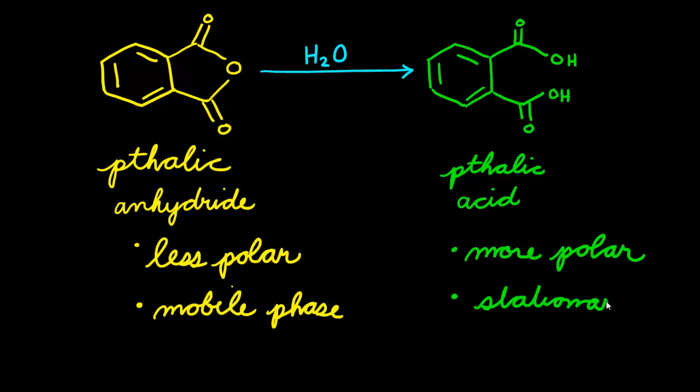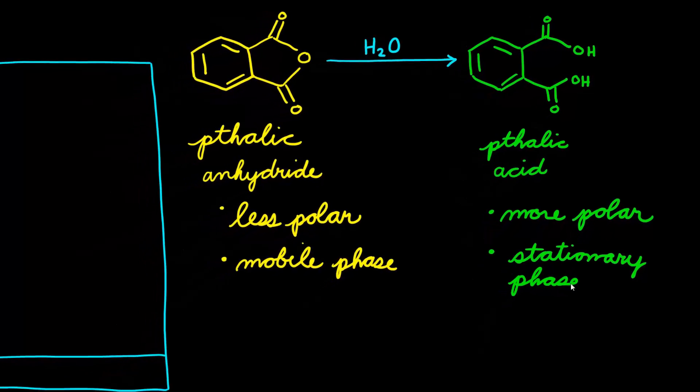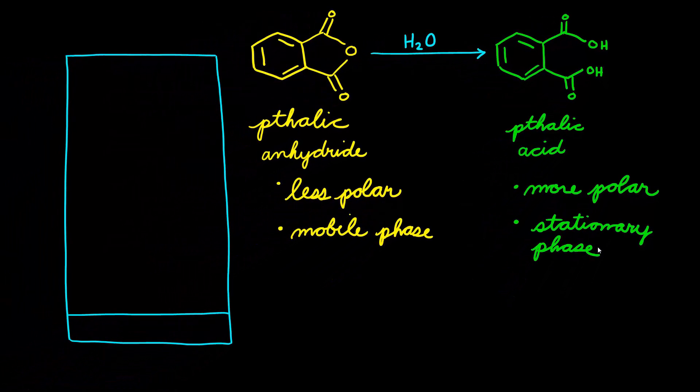And if we wanted to predict where these would show up on our TLC, we would think if something is more attracted to the mobile phase, that means it travels further. So let's put our yellow spot somewhere around here. And let's say that our solvent had gone up to about here. And compared to that, the green dot, or phthalic acid, must have traveled not quite as much. So it could have been around here.